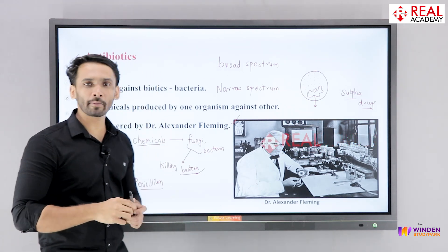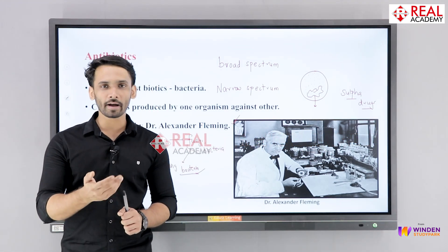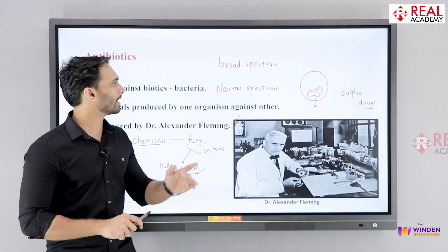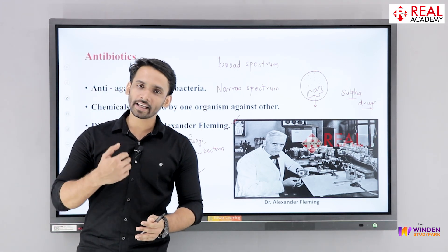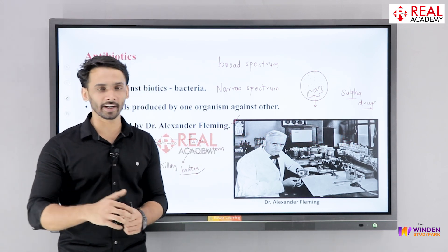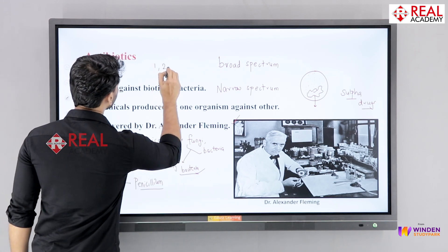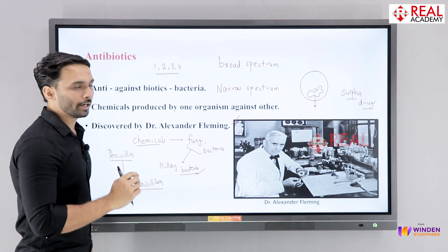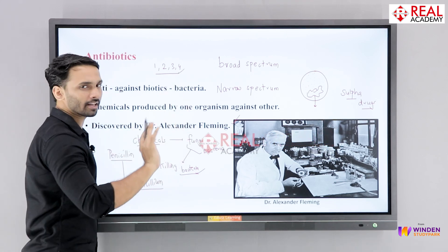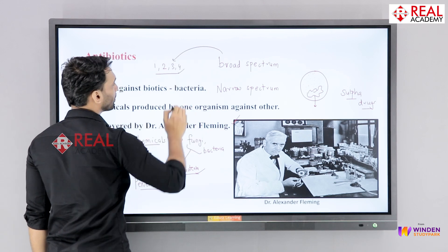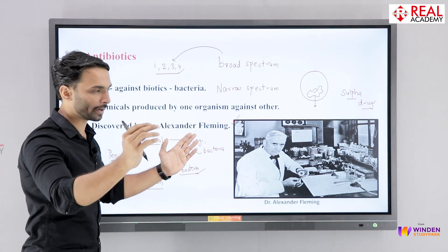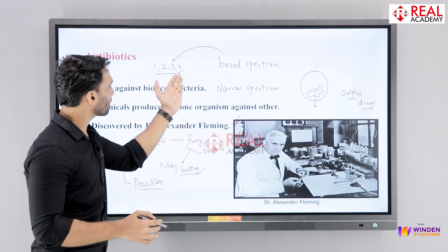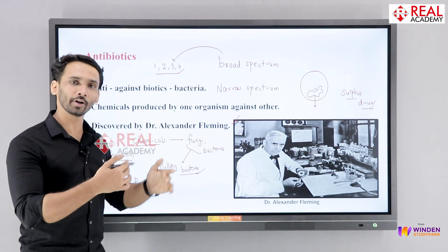Let's understand what happens. Let's say I go to the doctor with symptoms of a particular disease and ask for medicine. The doctor doesn't know exactly which bacteria is causing the problem — perhaps it could be any one of 40 possible bacteria. The doctor won't identify the specific bacteria right away. Instead, the doctor will give me a broad spectrum antibiotic, which can kill many types of bacteria. That way, whichever bacteria it is, the medicine can target it.